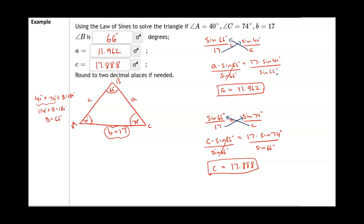To summarize: we always need the measurement of an angle and the length of its corresponding side as our known ratio. From there, we can find the missing sides or the missing angles.